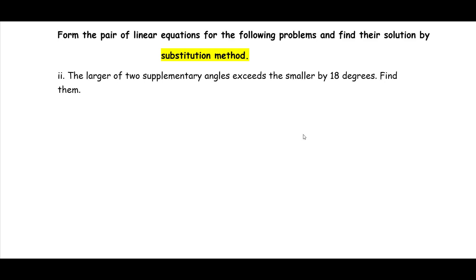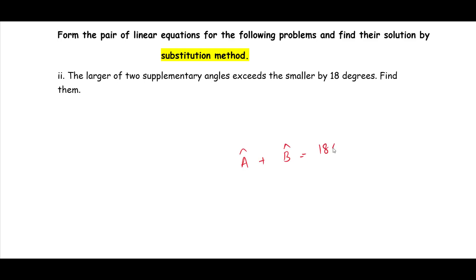Consider angle x and angle y. If the sum of these angles is 180 degrees, we call them supplementary angles. Now consider angle A and angle B — if angle A plus angle B equals 180 degrees, we call them supplementary angles.